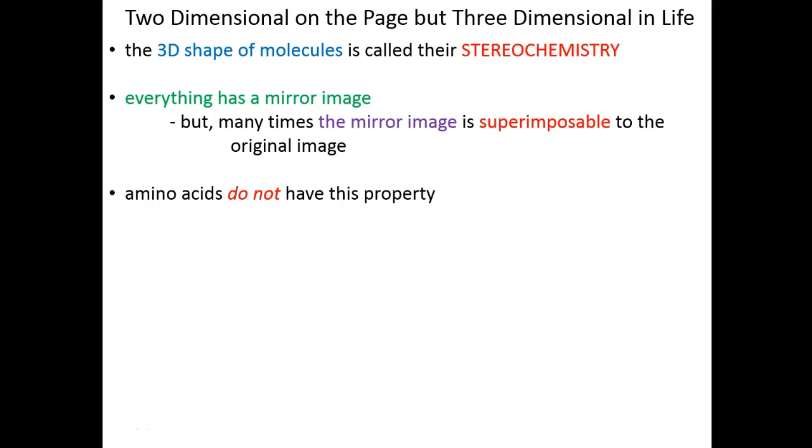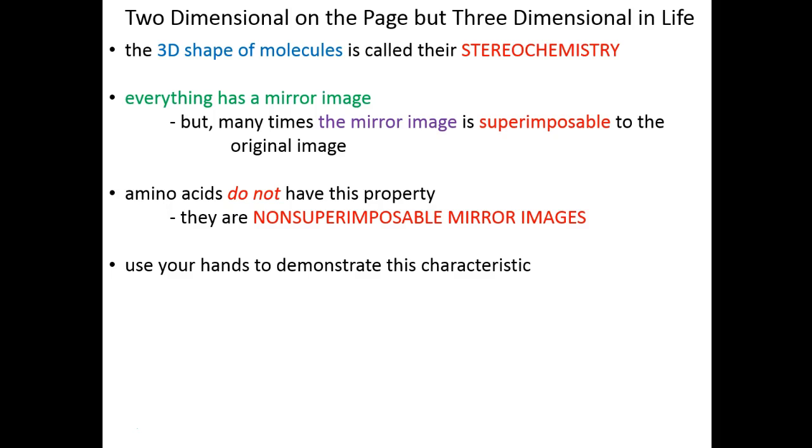Amino acids do not have this property. They are not superimposable mirror images. You can use your hands to demonstrate this. Go ahead and do it as I say. Hold your two hands up side by side. Make them looking into the mirror so you want the palms facing, thumbs pointing towards you, fingers straight up. If you think about it, your left hand is seeing its mirror image in your right hand. It's as though your left hand was in the mirror, and it's seeing your right hand as its reflection.